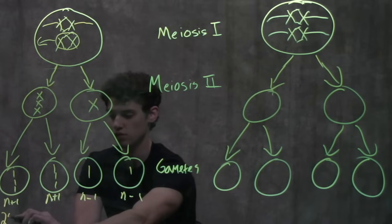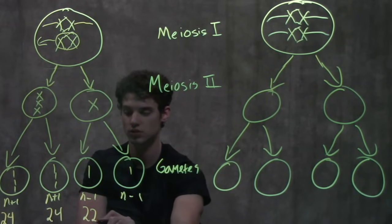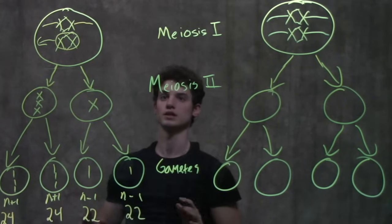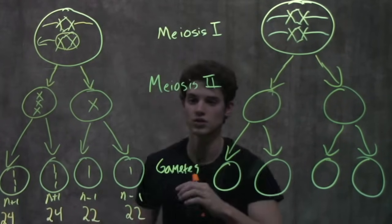That is the bulk of nondisjunction in meiosis I. Now, again, nondisjunction can occur in meiosis II instead.